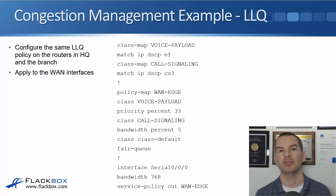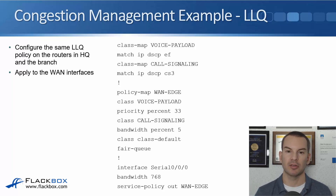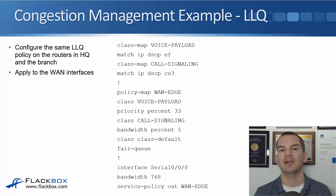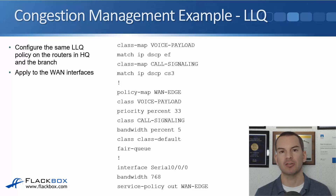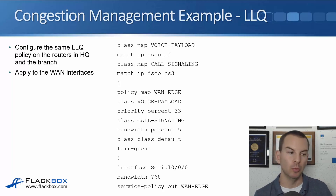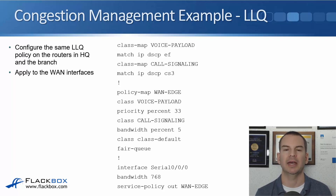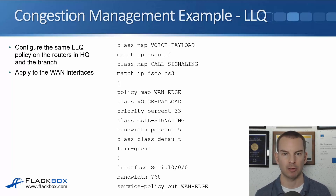The first part of the MQC is the class map, where we specify the traffic we're interested in. The config is: class-map voice-payload, match IP DSCP EF. And class-map call-signaling, match IP DSCP CS3. The IP phones mark their own packets — whenever a phone generates a spoken voice packet it marks it as DSCP EF, and when it generates a signaling packet to set up or tear down a call, it marks it as CS3. We recognize those packets with our class maps.